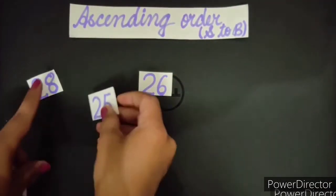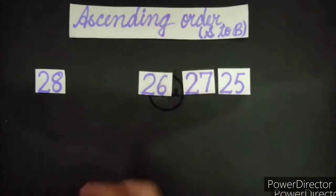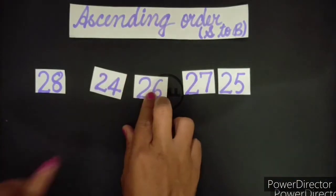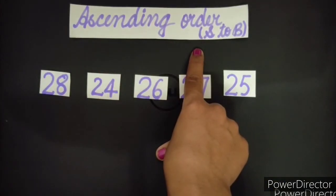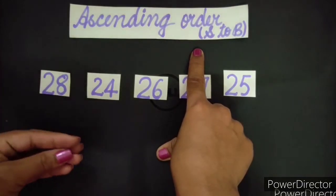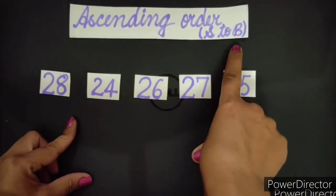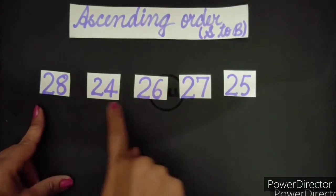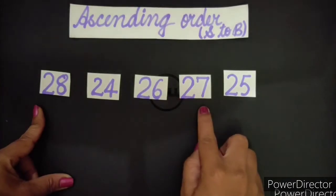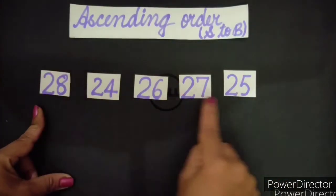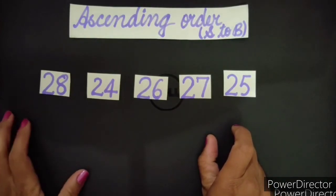26, 28, 25, 27 and 24. So as it's ascending order, ye kya hai? Ascending order aur hum kae sakte hai increasing order. Increasing order mein hume small to big tak jana hai. Now what we will do? Hum in numbers mein se, 28, 24, 26, 27, 25, in sabhi number mein se smallest number, sab se chota number find out karenge.